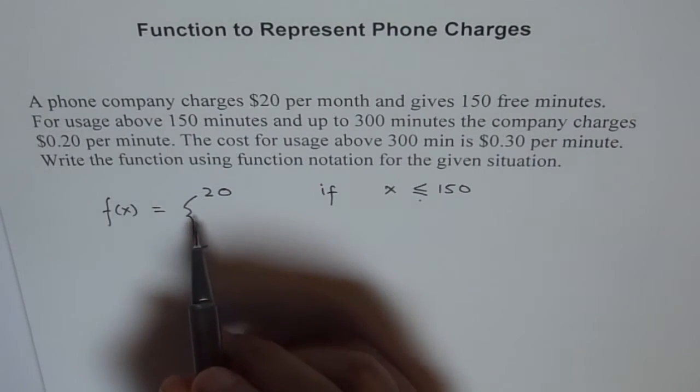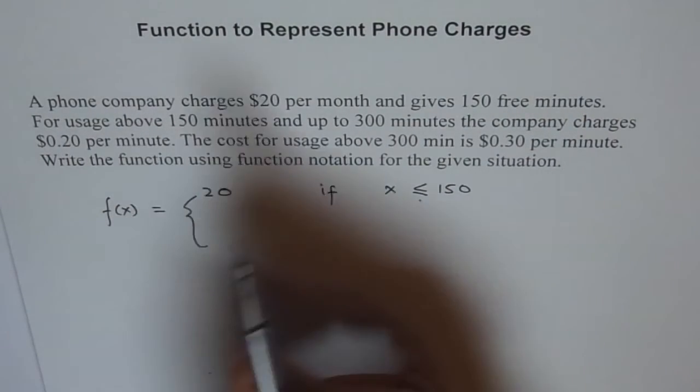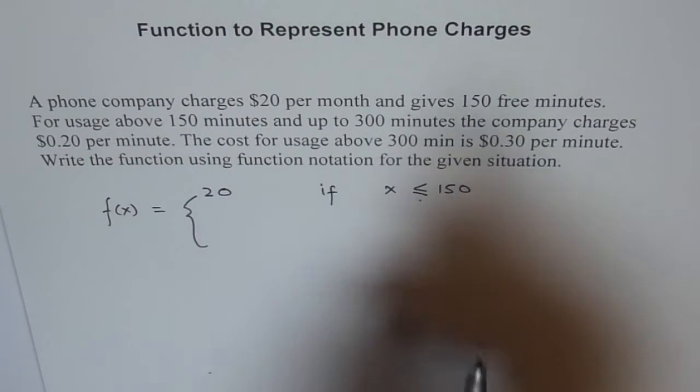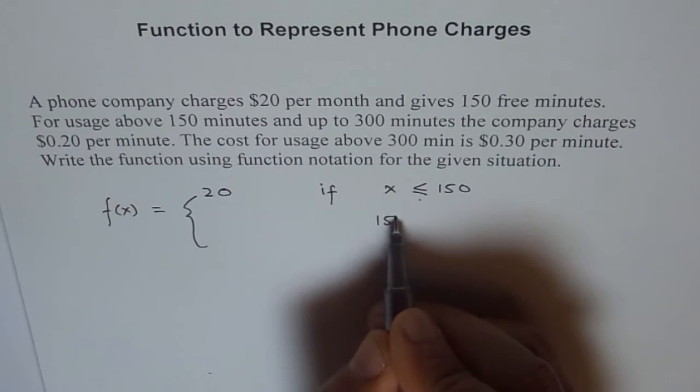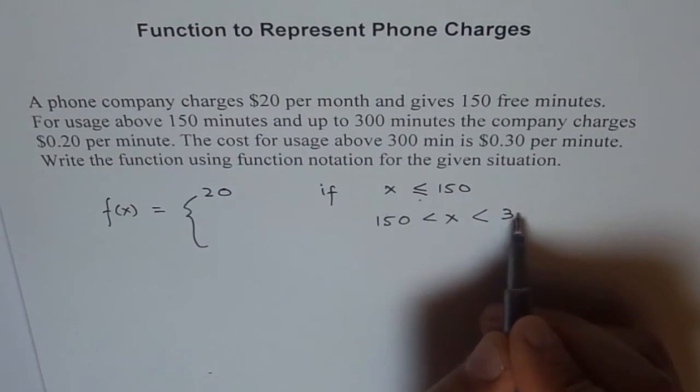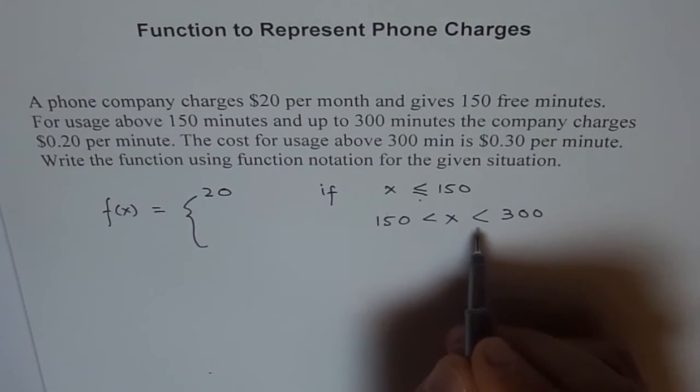Now the second piece is, for usage above 150 minutes and up to 300, that means from 150 to 300, so x is between 150 to 300. We will include 300 here.